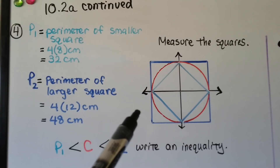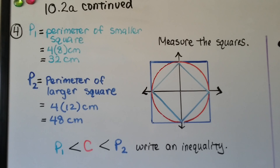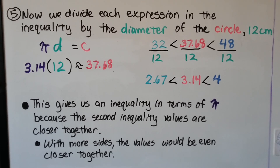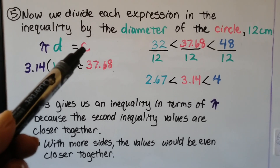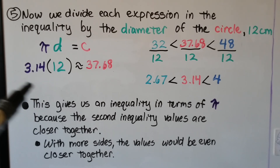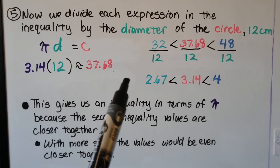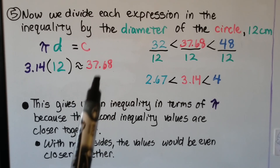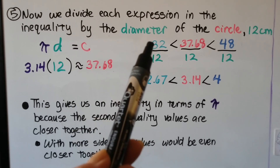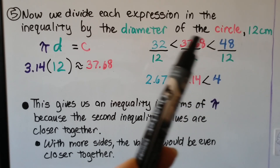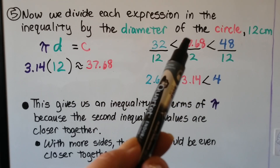The larger square has 4 sides each 12 centimeters, so its perimeter P₂ is 48 centimeters. We write the inequality: c, the circumference, is greater than P₁ and less than P₂. We know pi times the diameter equals the circumference, and our diameter is 12. So 3.14 × 12 is approximately 37.68, which is the circumference.